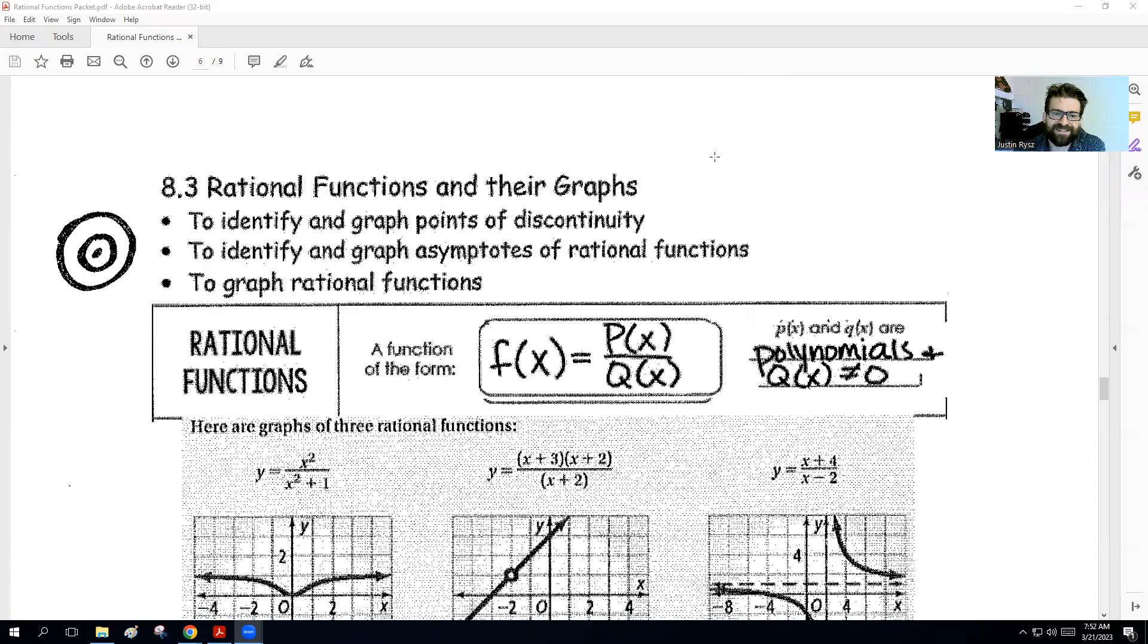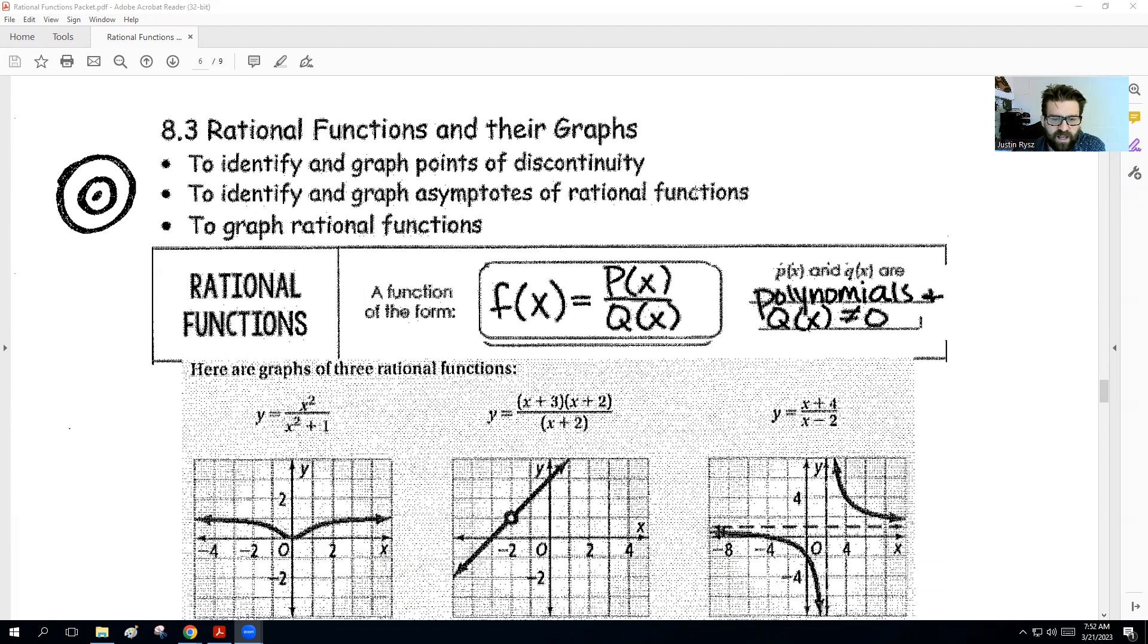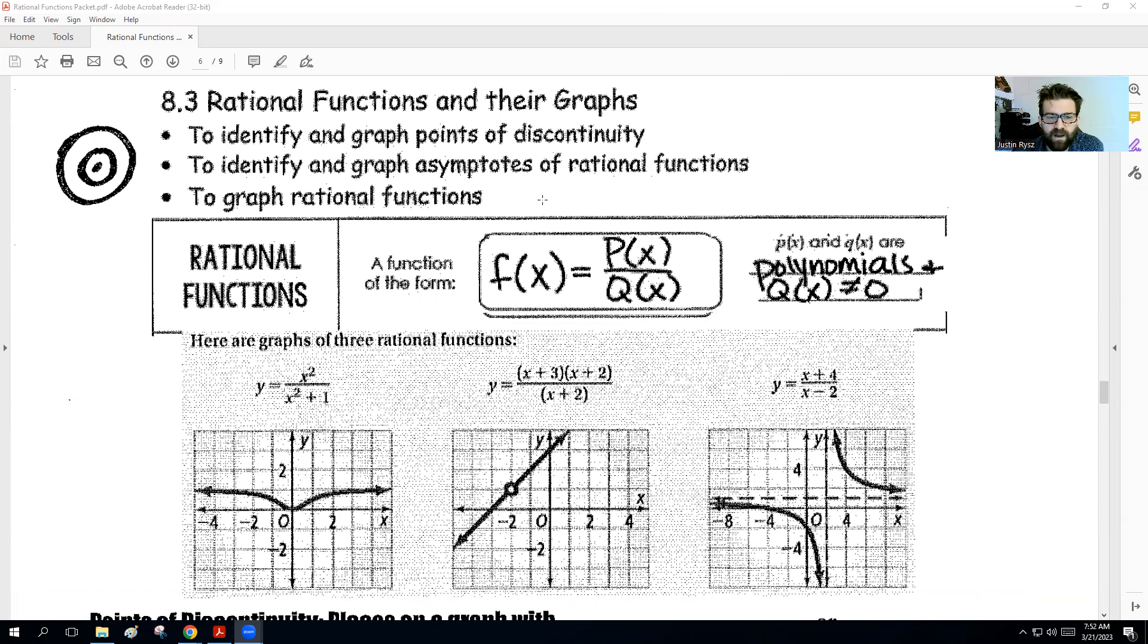Hey guys, Mr. Reiss here to help you out on the next section. We're going to split this up into two parts, but the first part we're going to be looking at is making sure we can look at points of discontinuity, and then make sure we can identify asymptotes of rational functions, and then hopefully we'll be able to graph those. A lot of times with the graphing, we'll be using like Desmos or a graphing calculator, but hopefully we can identify the key features of that graph.